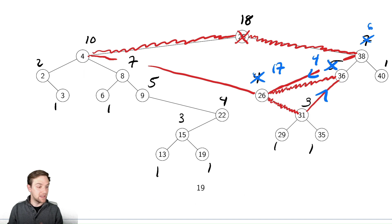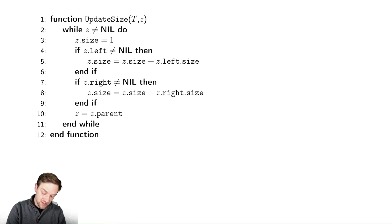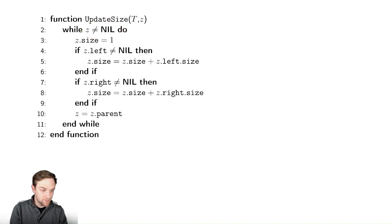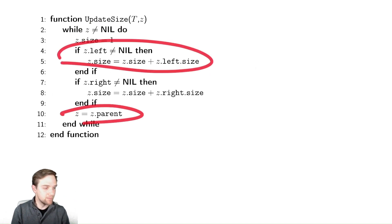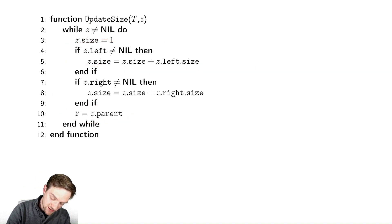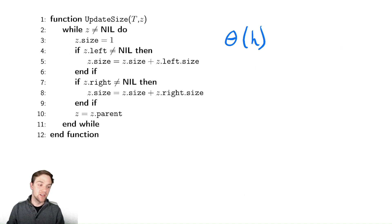So let's look at this update size method. To update the size, while I still have places to go upwards, I am going to update the sizes and then go up — exactly what I would expect. So this is going to be in Θ(h), again because we are always only ascending the tree, we are never going back down or ruining anything there. So this is going to be in Θ(h).